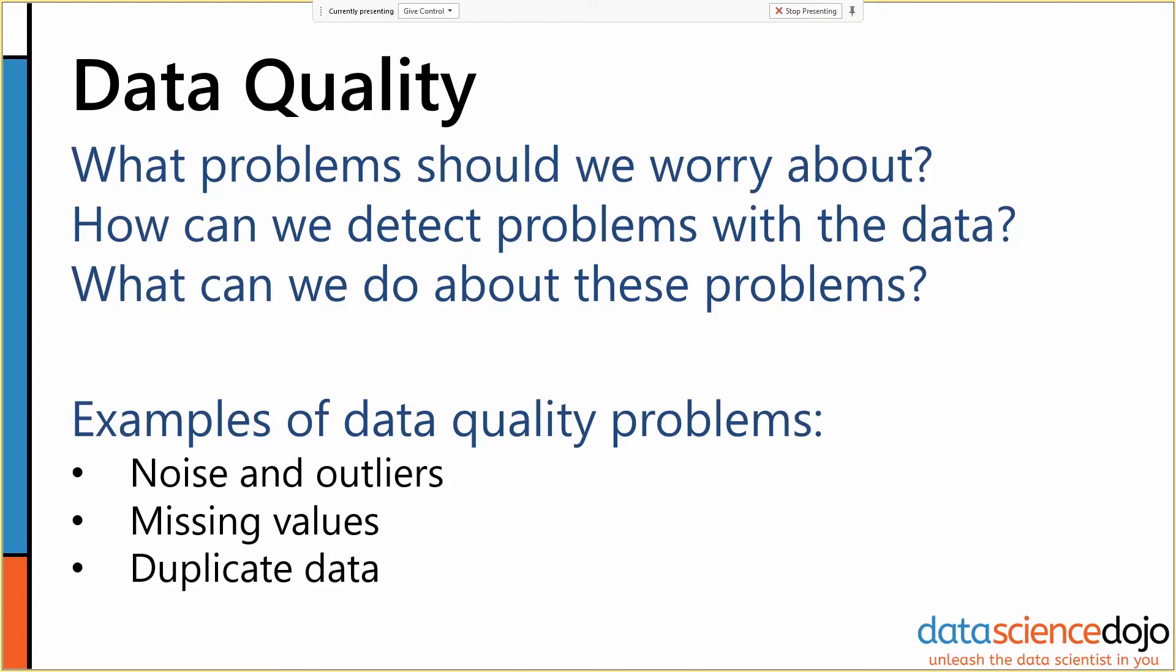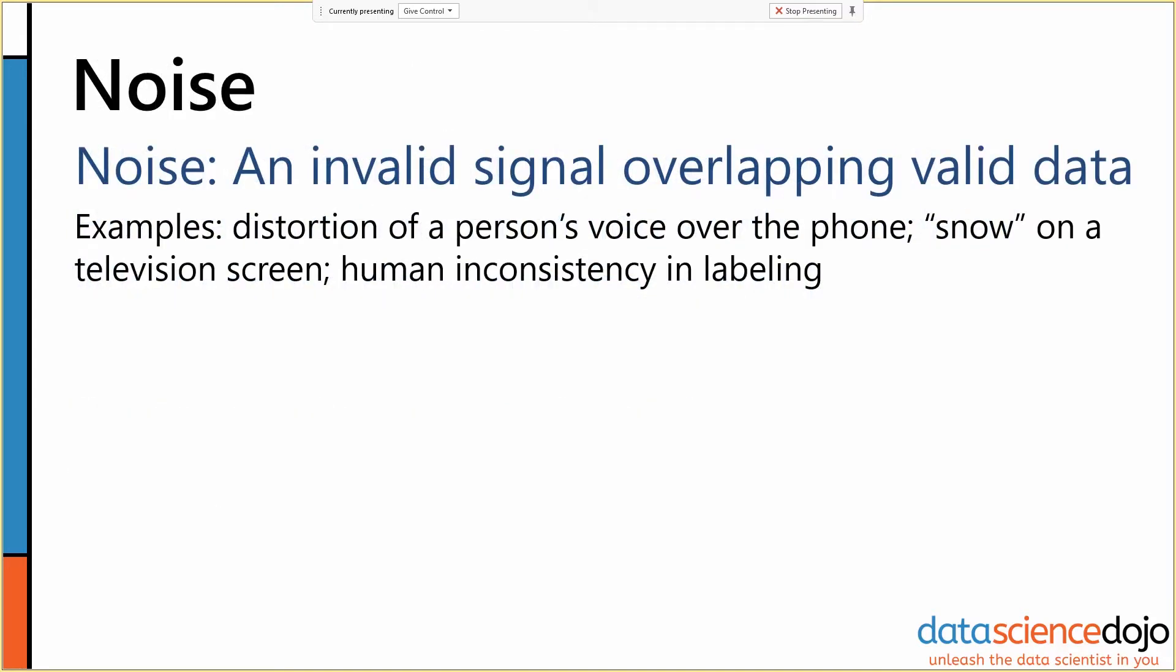So, those of you who have scientific or signal processing background are probably familiar with the term noise. Noise, in the data science context, is when we have an invalid signal of some sort that overlaps valid data.